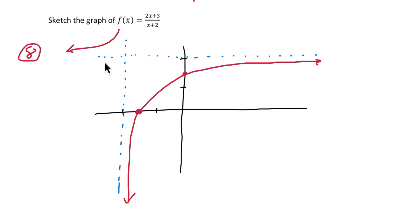If we wanted to be more accurate, we could pick some points, say negative 3, plug it into f and see what the actual y value is. Or we could go to the calculator and get a sketch. But for now, we're just going for a very rough sketch.